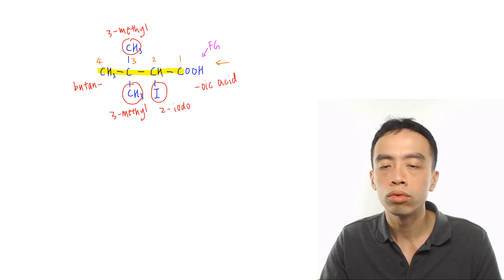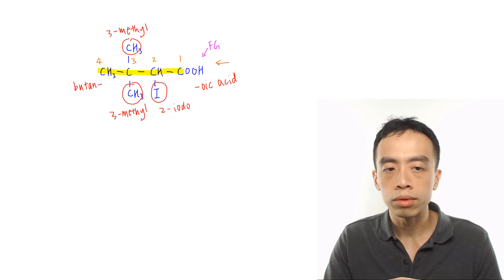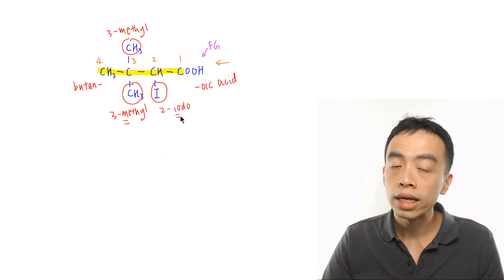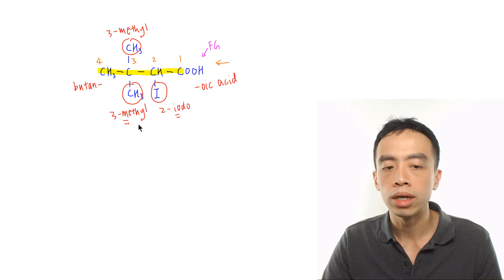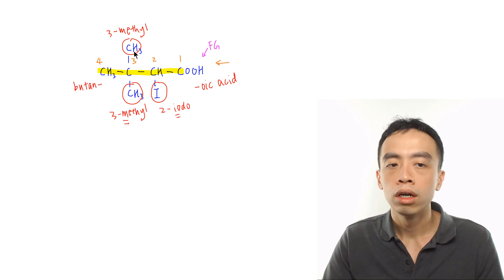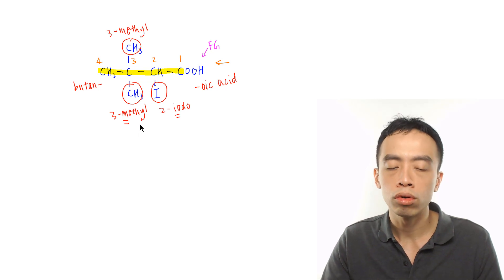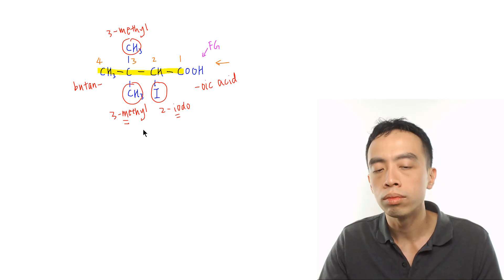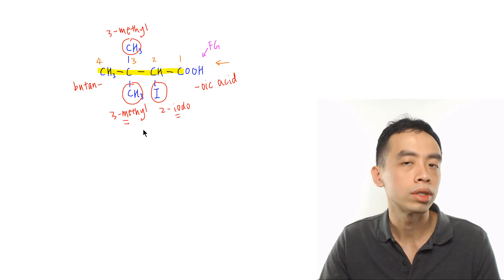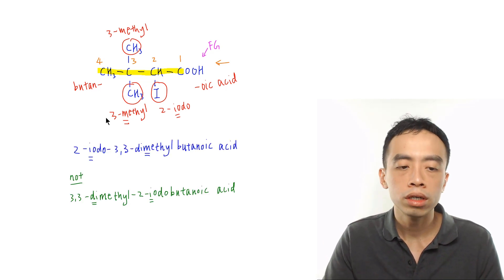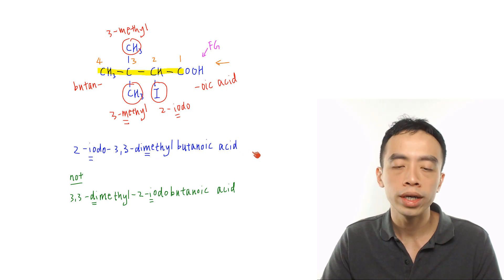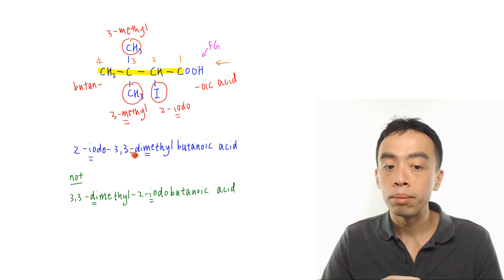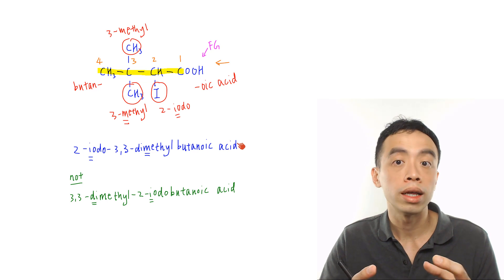Now we are ready to combine all these terms together. When we name the organic compound, the substituents will be placed at the beginning and arranged in alphabetical order. So A comes before M, so I'll name the aldo group first, then the methyl group. Another thing is if I have two or more of the same groups, there's no need to repeat 3-methyl, 3-methyl — I can combine them together and just call it a 3,3-dimethyl group. So the name for this compound, combining everything together, would be 2-aldo-3,3-dimethylbutanoic acid. Between number and letter we put a dash, between number and number we put a comma, and between letter and letter we can combine everything together.